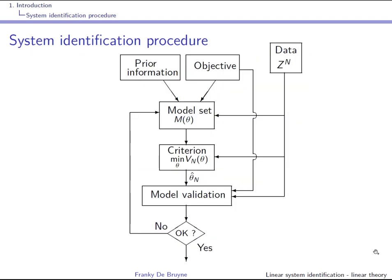Here is a graphical representation of the system identification procedure. First you generate your dataset — ideally using experiment design. This dataset is used at the different stages of the identification procedure. Then you choose a model set.